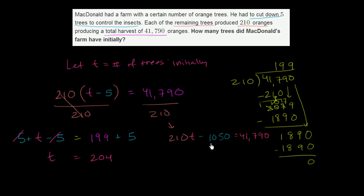And then you could add 1,050 to both sides. The left-hand side, you're just going to be left with 210t.